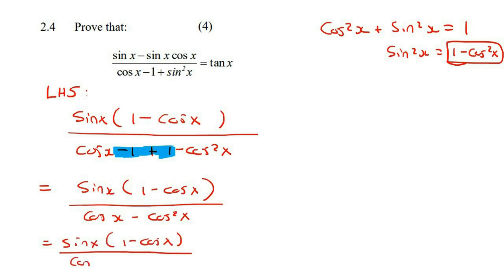Now at the bottom, take out a cos as a common factor, and you're left with 1 minus cos x. Top and bottom cancel.